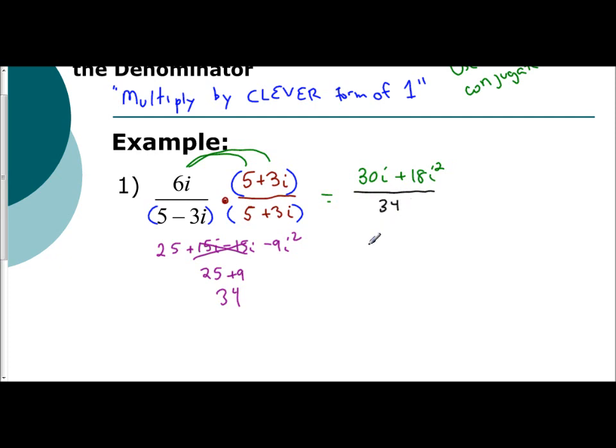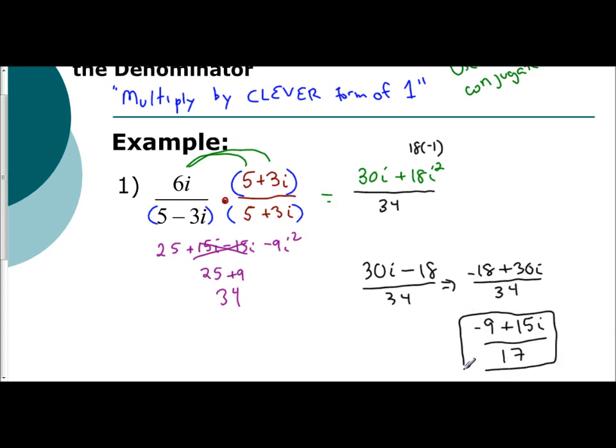And so now what we need to do is we need to simplify the top. 18i squared, i squared is negative 1. So really you have 30i minus 18 over 34. Remember that you have to put this in your complex form of your real number first, negative 18, and then your imaginary number. Now we're not quite done. If you were to look at all the terms, negative 18, 30, 34, they're all even. They're all divisible by 2. So I can take a 2 out. You get negative 9 plus 15i over 17. And that is your final answer.